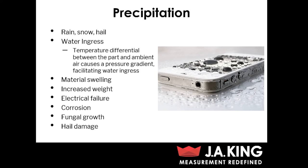When we're doing precipitation testing to check for water ingress specifically, we'll actually want to impose a temperature differential between the part itself and the ambient air. What this is going to do is actually cause a pressure gradient, which is going to facilitate water ingress by creating a more low pressure environment inside the part and actually pulling that water into the part, which is going to help create a more aggressive test.